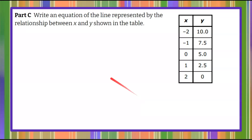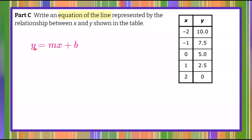Moving on to Part C: we're asked to write an equation of the line represented by the relationship between x and y shown in the table. Please pause, write the equation of the line, and then come back. Welcome back. Here we're writing the equation of a line. The equation of a line is written in the form y equals mx plus b — we call this slope-intercept form, where m is the slope and b is the y-intercept.